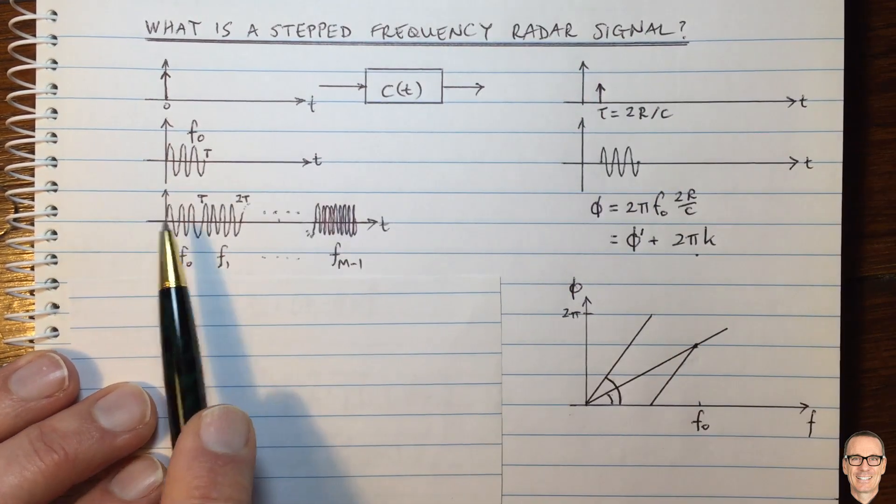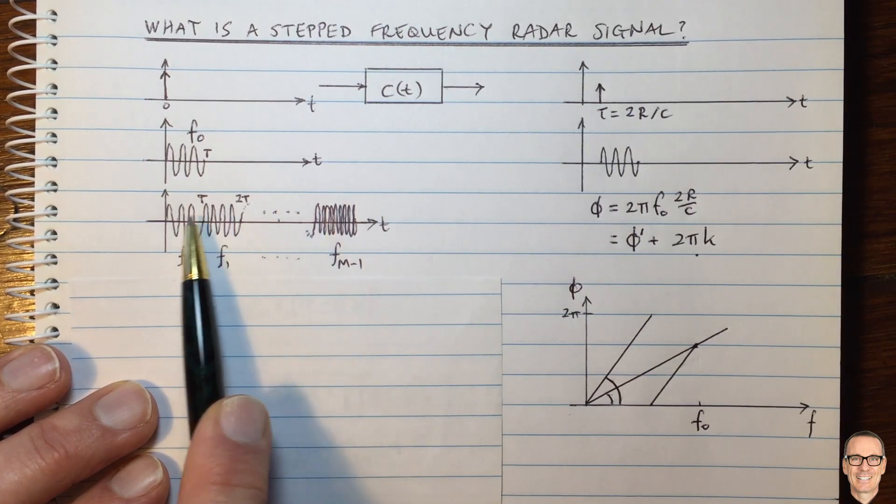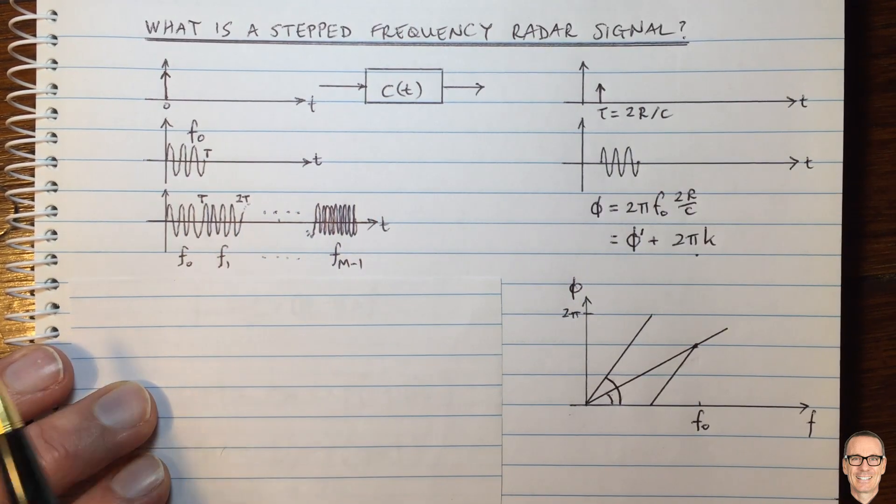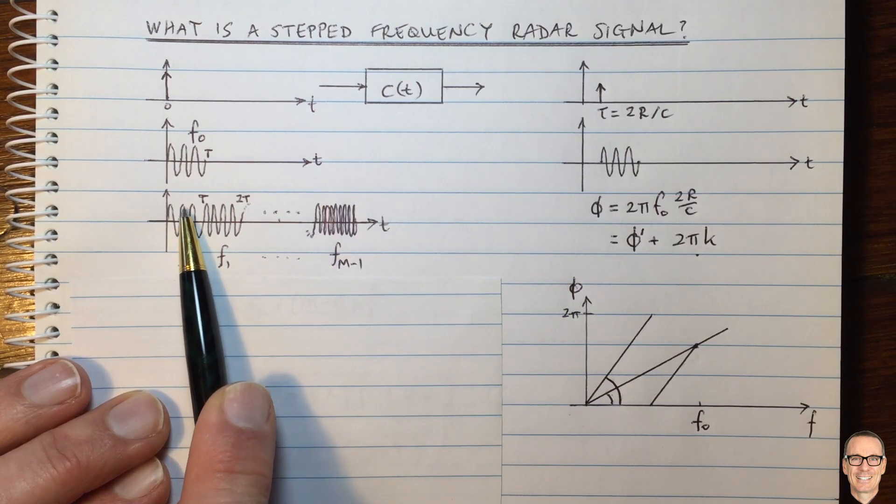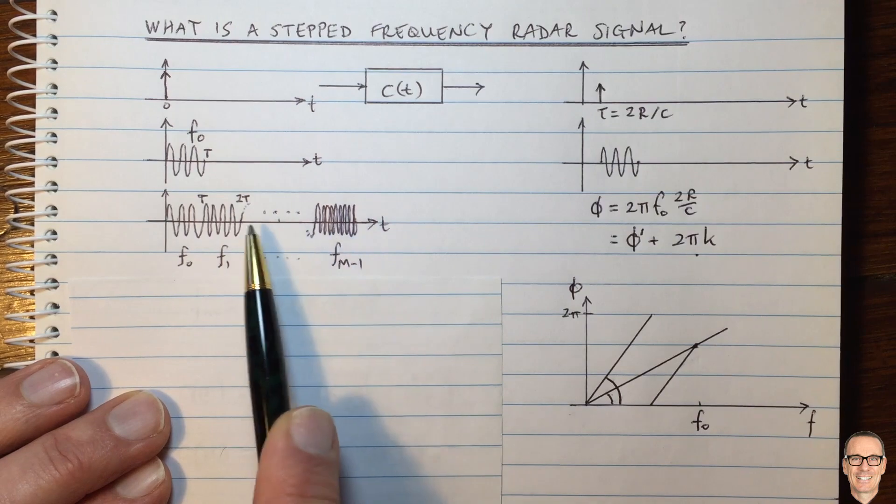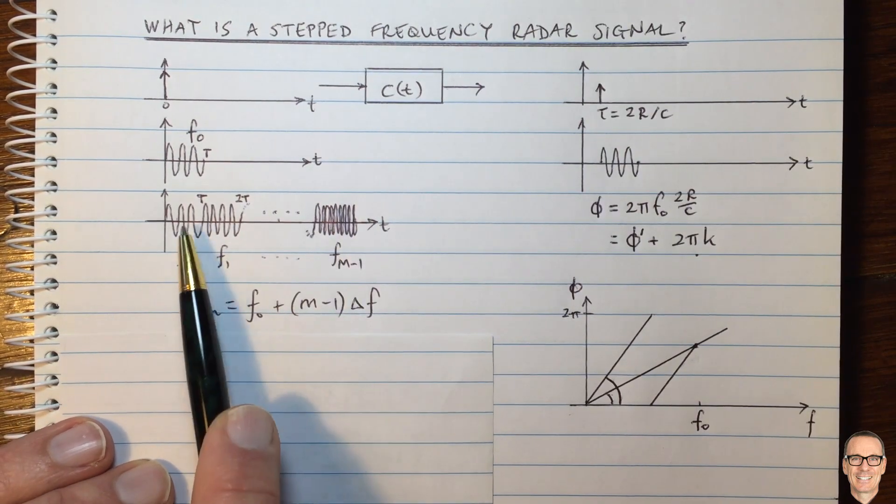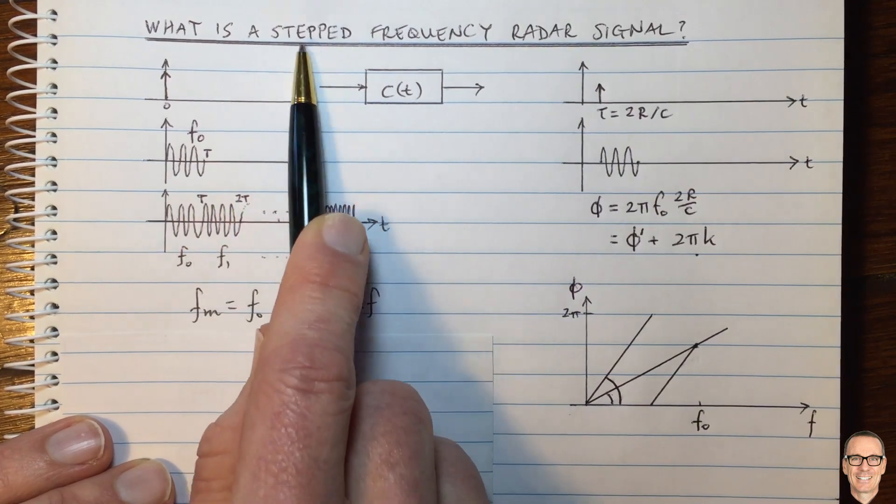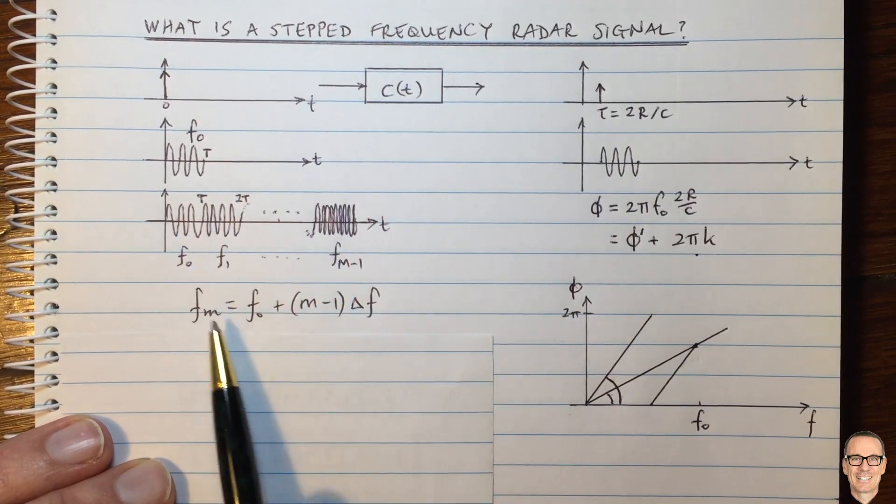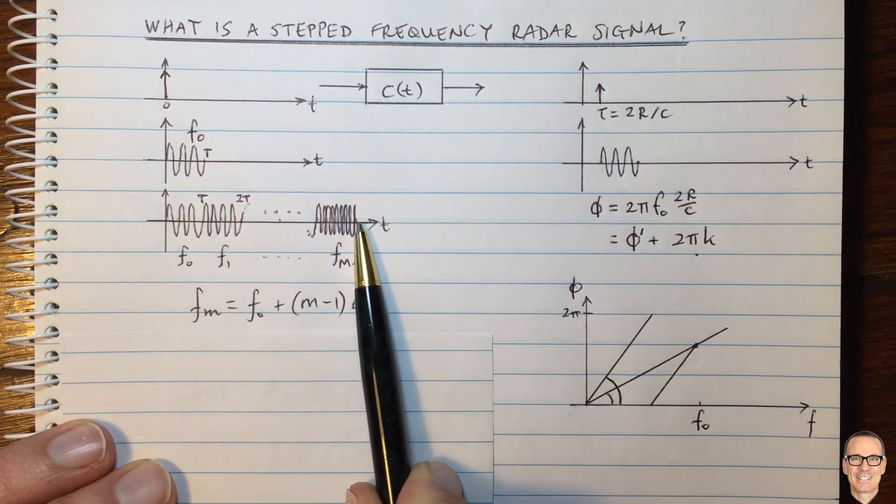So here we have a waveform that now every capital T period of time, we're going to increase the frequency. So here this has three cycles in that period. This next one that I've drawn has four, and so on up to a high frequency. And so we can increase the frequency, stepping, increasing the frequency as we go in time.